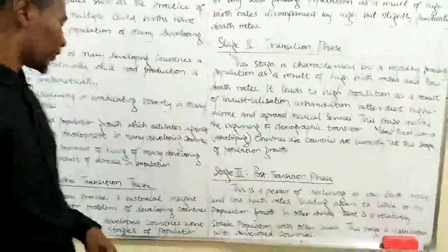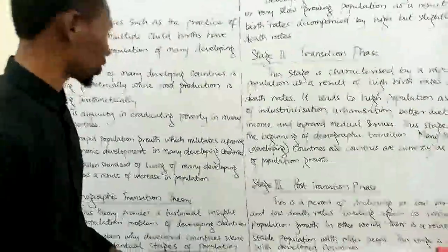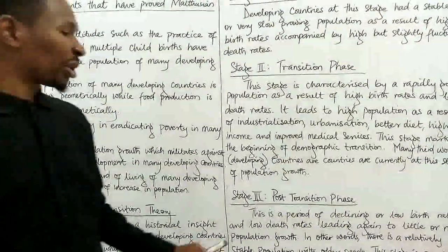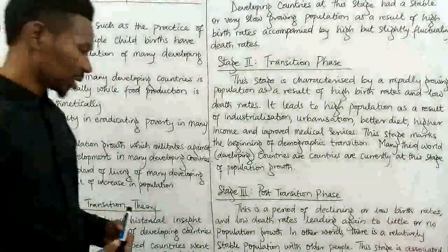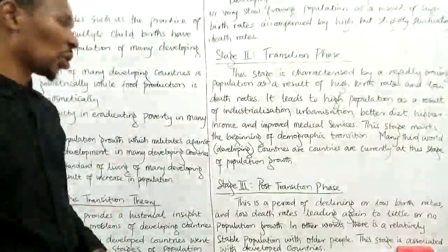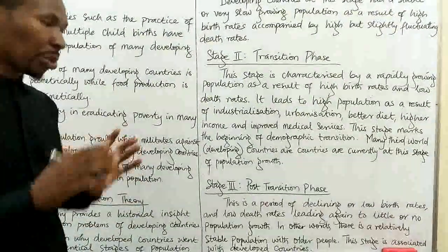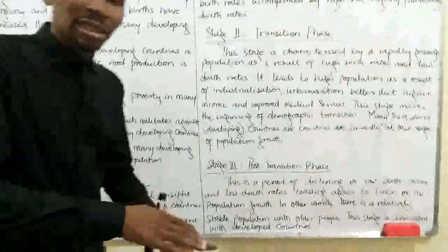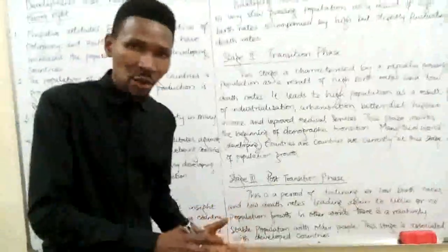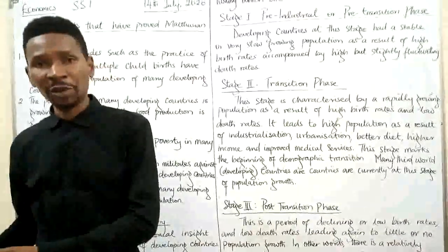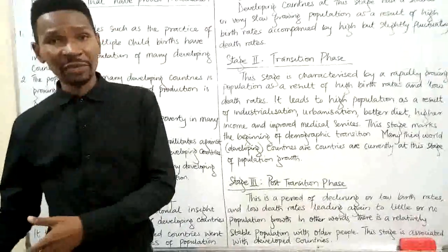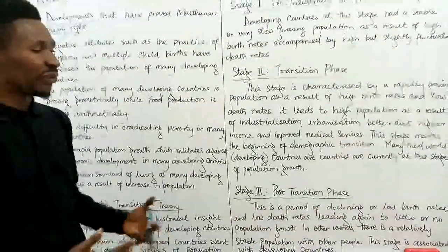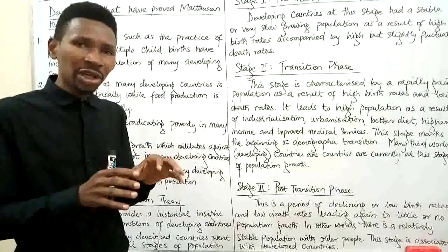Now let's look at the third stage of the demographic transition theory — it is called the post-transition phase. This is a period of declining or low birth rates and low death rates, leading again to a relatively stable population. It is a stage where the number of people that die is low, and the number of people being given birth to is also almost equally low. So at this phase, population becomes stable or is growing very slowly.